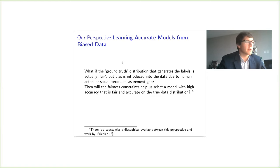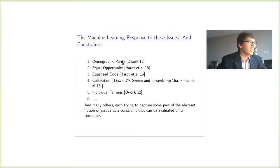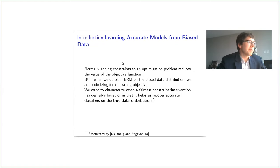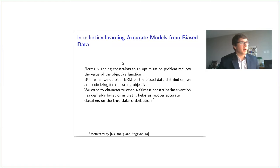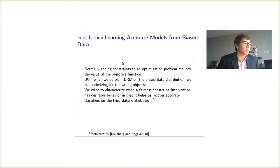There's a substantial philosophical overlap between our paper and a great paper by Friedler et al. in 2018, so I recommend looking at that paper. Normally adding constraints to an optimization problem strictly hurts your objective, because the space of feasible solutions is smaller. But when we do plain ERM on the biased data, we're optimizing for the wrong thing. We want to characterize when these fairness constraints have desirable behavior that helps us recover accurate classifiers on the true data distribution — maybe these fairness constraints can align our learning process with the true objective. This is also motivated by a great paper by John Kleinberg and Manish Raghavan on a similar problem in a ranking setting for the Rooney rule.